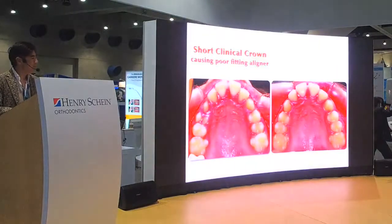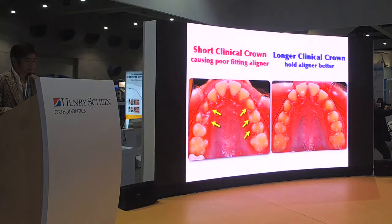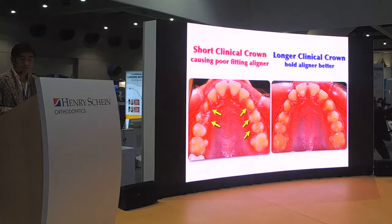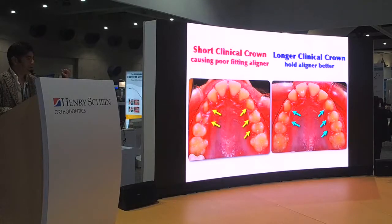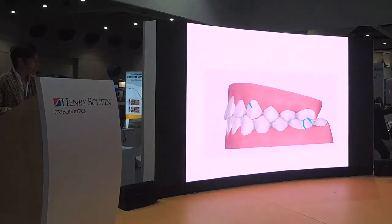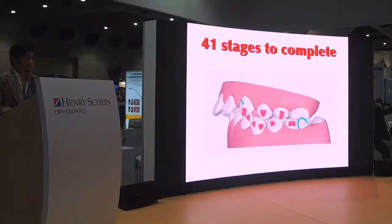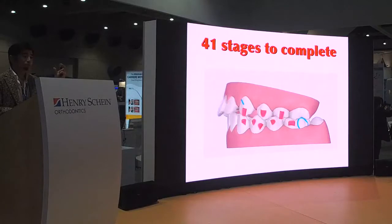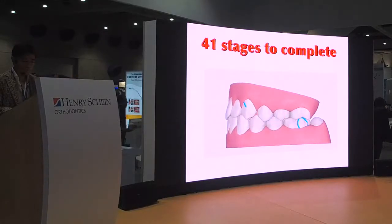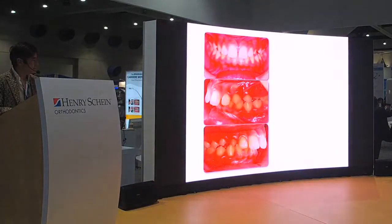After 4 months, we removed the motion appliance and looked at those teeth. We now have longer clinical crowns — we can scan the patient's mouth and the aligners can hold the teeth better. Now we are ready for incisor retractions with aligners. With a longer clinical crown, we can hold the teeth more precisely. This is the beginning, and this is the end of treatment.